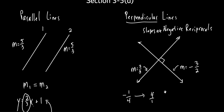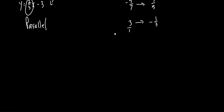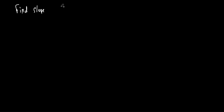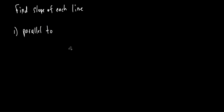The quiz will ask things like: if one line has slope two-thirds, what's the slope of a perpendicular line? That would be negative three over two. The quiz is on Thursday — today's Tuesday. Let me do a couple of problems very similar to what's on the quiz. Problem 1: find the slope of a line parallel to y = −5x + 2.